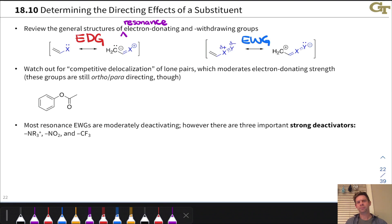Another point I wanted to make here in terms of determining the directing effects of a substituent is to watch out for carbonyl groups and what I call competitive delocalization of lone pairs onto a group that's attached to a donating group but on the opposite side of the aromatic ring. Esters and amides are the most important examples of this.